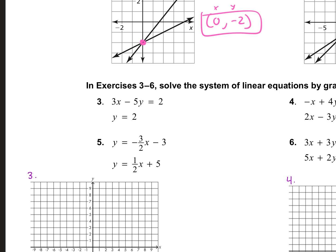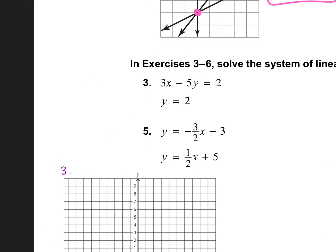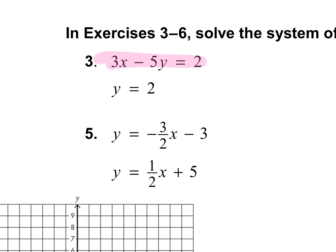In problems three through six, we actually have to graph them. Looking at number three, let's graph the first line first — we graph each line separately. Is this in a form that we like to graph in? We prefer y equals mx plus b. We can make it that way, but we would get fractions. So we could graph it using our x and y-intercept. How would we find the x-intercept? By making y zero, so we plug in zero for y and it goes away. We have 3x equals 2, so we divide both sides by three, giving x equals two-thirds.